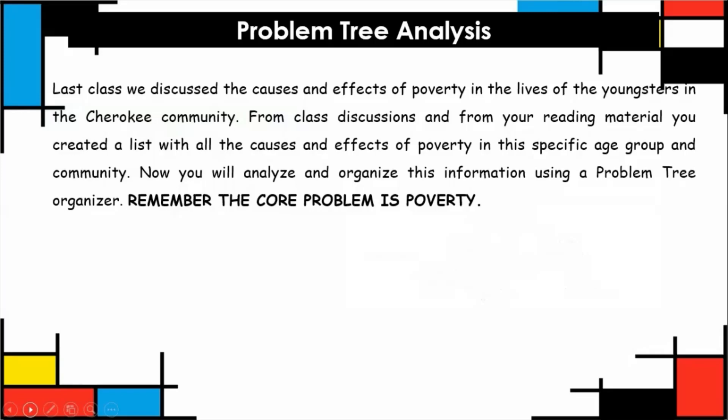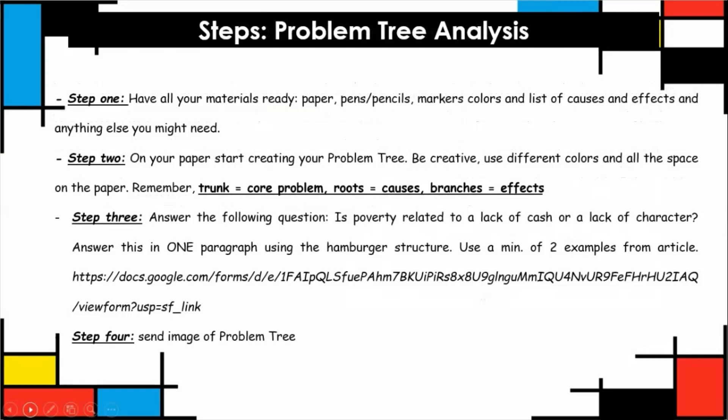Steps to create a problem tree analysis: First, you need to have all your materials ready. That means paper, pens, pencils, markers, colors, and you need to have your list of causes and effects. Think about anything else you might need. Step two: you're gonna create this on paper. I want you to be creative. I want you to use different colors and all the space. Remember the parts: the trunk is the core problem, the roots are the causes, and the branches are the effects.